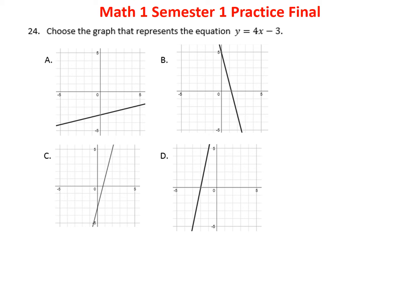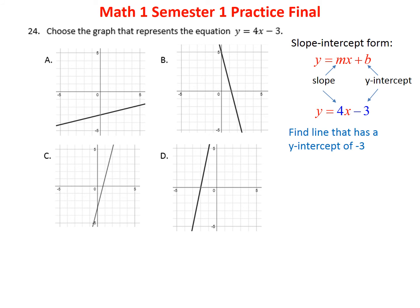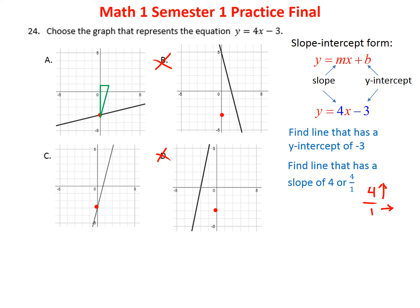Problem twenty-four: which graph represents y equals 4x minus 3? It's already in slope-intercept form. The y-intercept is negative 3 — graphs A and C have this; B and D are eliminated. The slope is 4 over 1, meaning up 4 and right 1. Checking A, the slope doesn't match. Graph C goes up 4 over 1 and lands on the correct point. The answer is C.